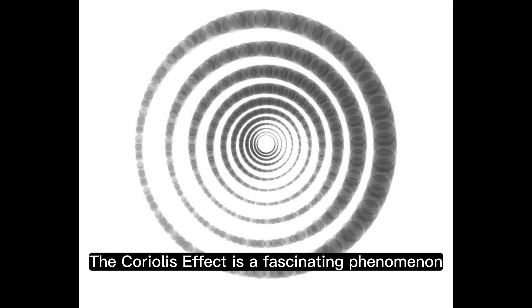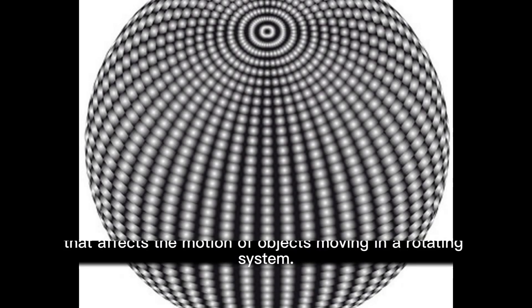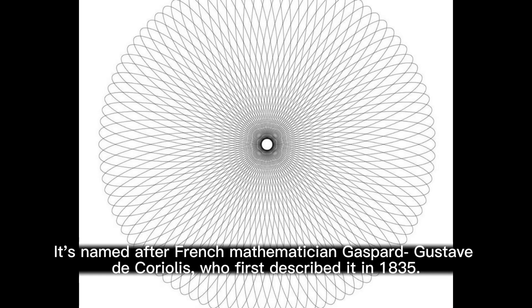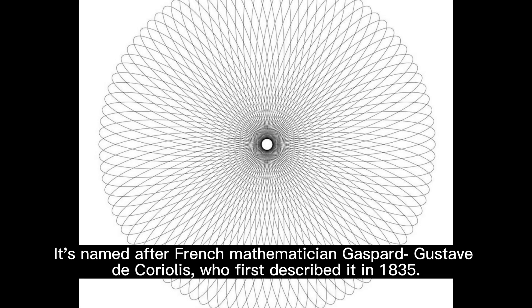The Coriolis effect is a fascinating phenomenon that affects the motion of objects moving in a rotating system. It's named after French mathematician Gaspard Gustave de Coriolis, who first described it in 1835.